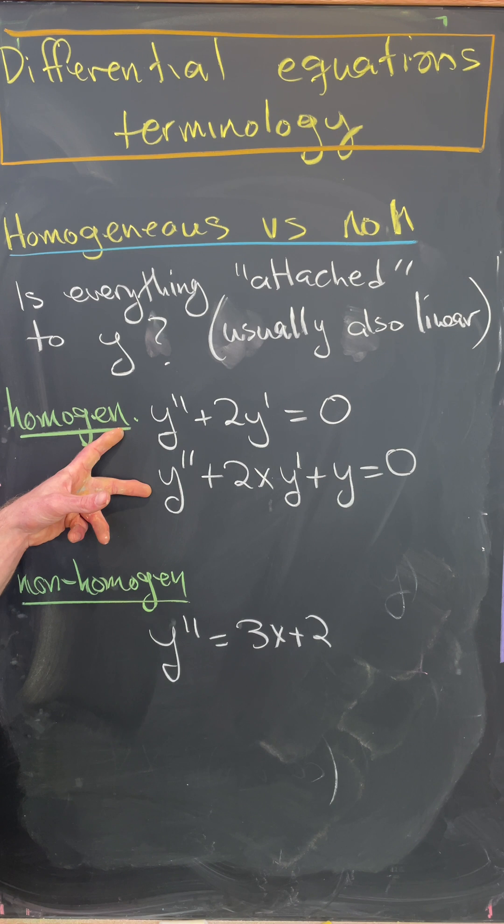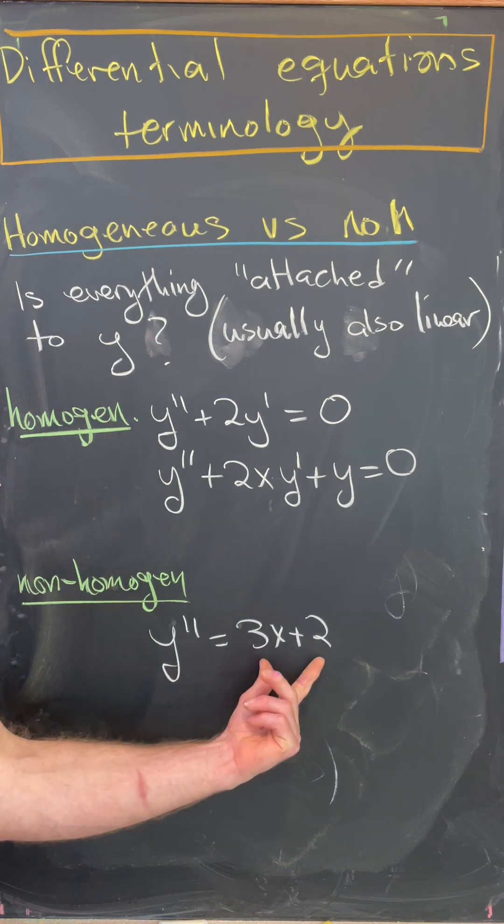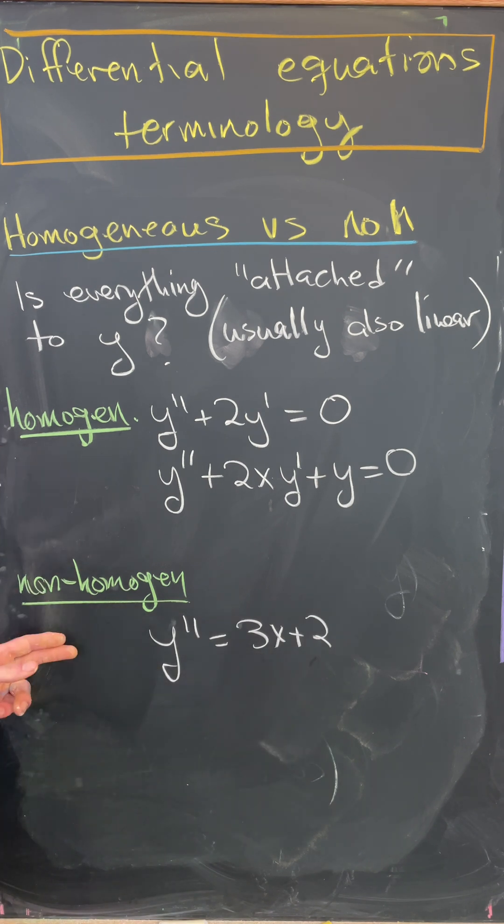So notice everything here is attached to y or its derivative, whereas down here, you've got this free term, which is not attached to y or its derivative. These are homogeneous. This is non-homogeneous.